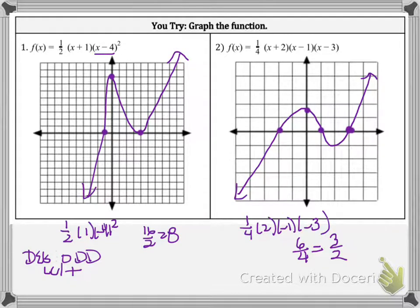Okay, so here are the answers to these functions, if you try graphing them. Both of them have odd degree, but the first one has a repeated root at x equals 4, and they're both positive leading coefficients.